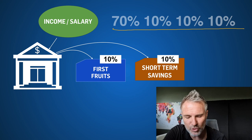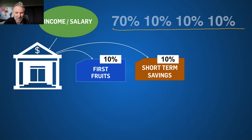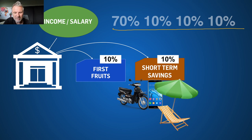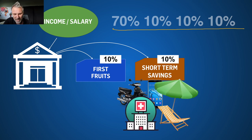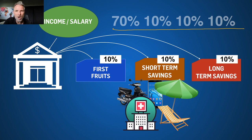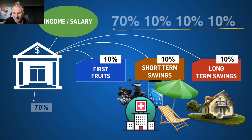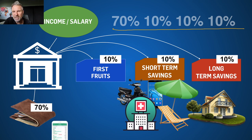I encourage everybody to follow this principle. All your money goes into the bank, then 10% goes to your first fruits, 10% into short-term savings — for your motorbike, phone, holidays, emergencies, doctor bills — and 10% into long-term savings so that when you are 65 years old you will have enough money to retire, buy land, buy a house, and not be dependent on your children. And 70% goes into your budget — the money you spend monthly.